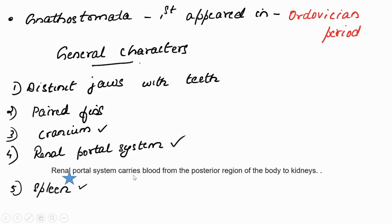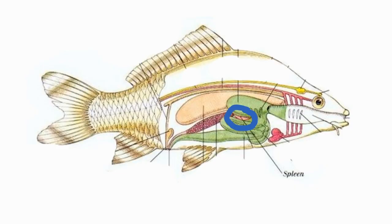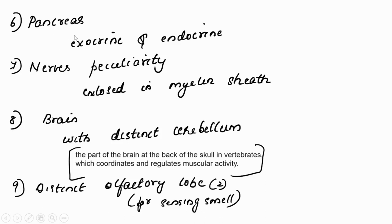Gnathostomata also possesses a spleen, which filters blood and destroys worn-out RBCs. The pancreas functions both as exocrine — secreting digestive enzymes — and endocrine — secreting hormones. So the pancreas has both exocrine and endocrine function.